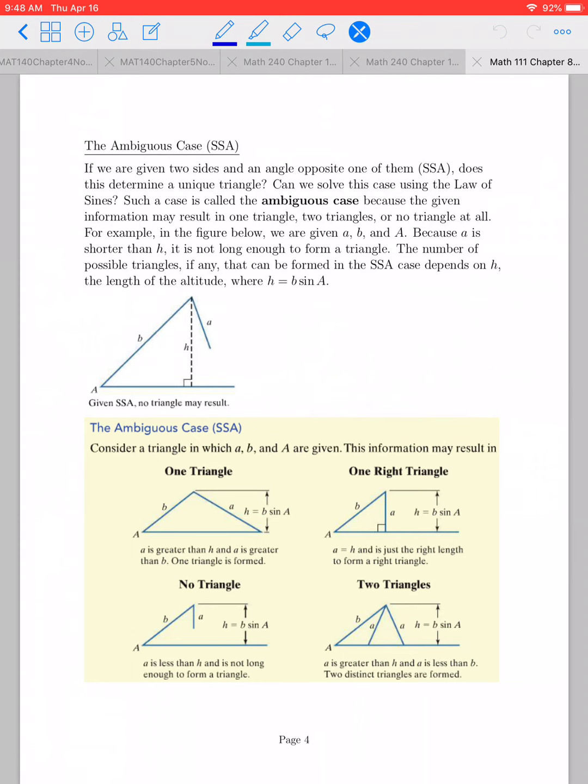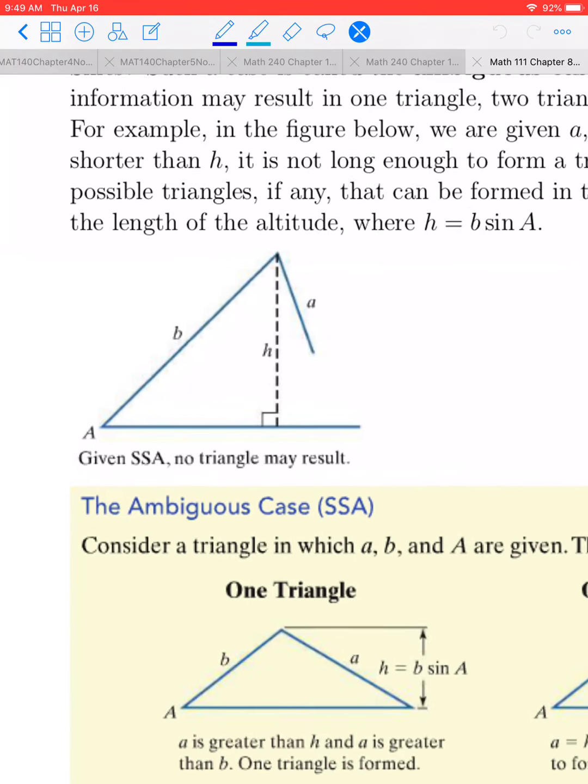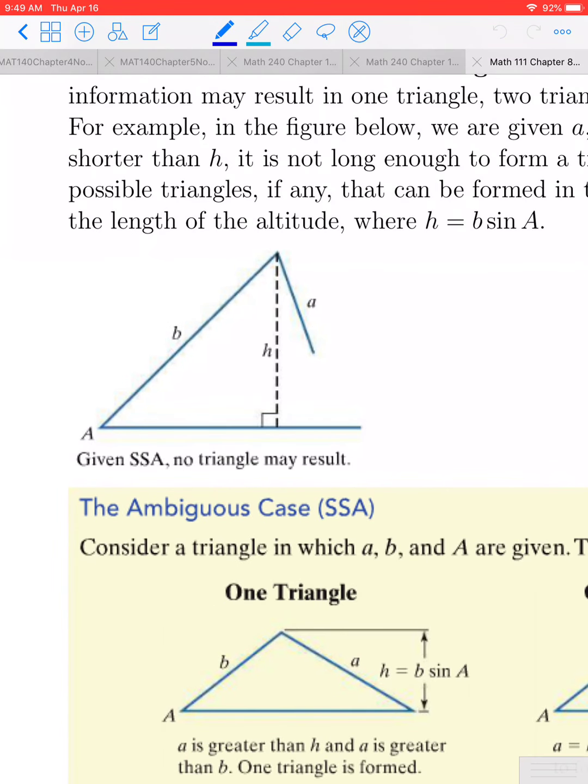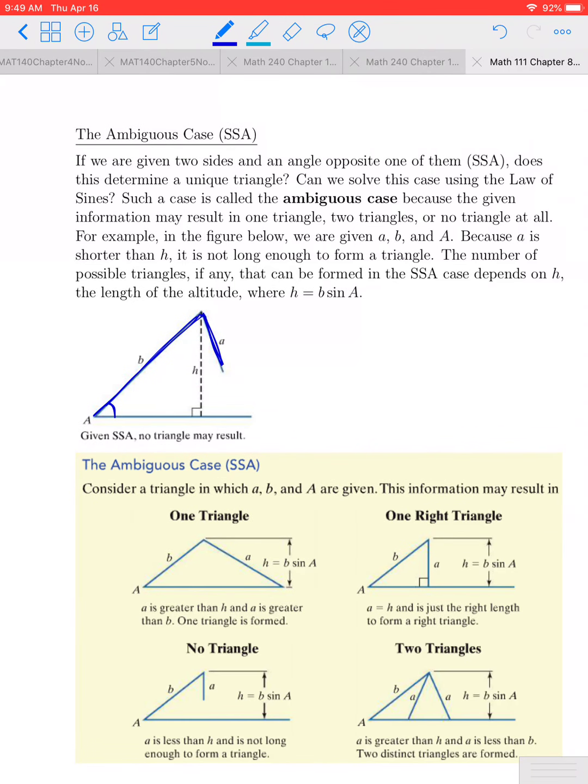One of the things that can often happen whenever we're trying to solve a triangle, when we have what's called the SSA case. SSA stands for two sides and the angle that is not in between those two sides. For example, if I look at this diagram, suppose I'm given these two sides. So I have side A, which would be known to us, side B, which would also be known to us, and I have one of the angles that's not in between the two. So let's suppose I have this angle here.